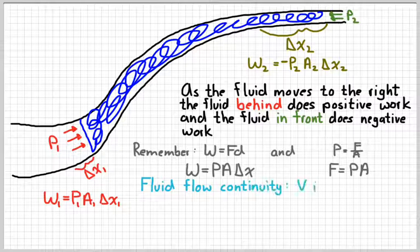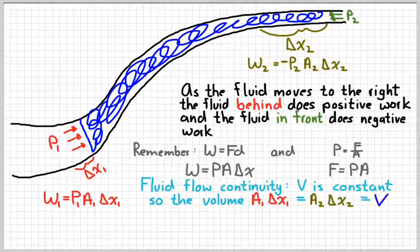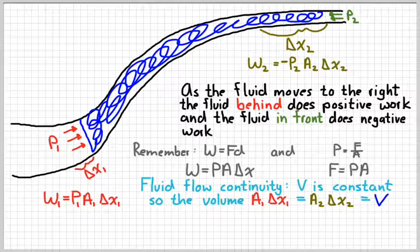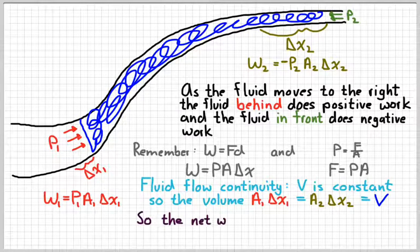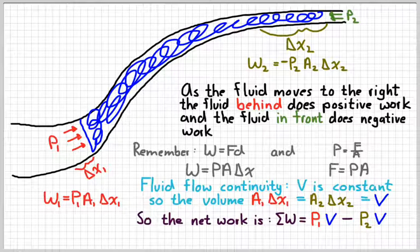So remember fluid flow continuity again. That means that the volume, A times delta x, is the same for both parts. And so I'm just going to write, instead of A1 delta x1 and A2 delta x2, I'm just going to write a V for volume. So, summing those two terms up, the net work done on that blue chunk of fluid is P1 times some volume minus P2 times some volume. What that volume actually is, as we're going to find out in a few minutes, doesn't matter because it's going to cancel out in our equations. So if you're worried about, well, how do I pick the volume? The answer is you don't.